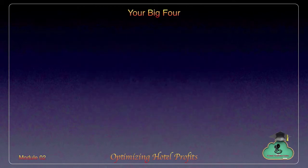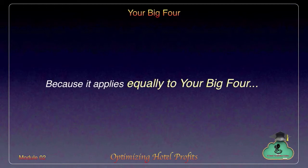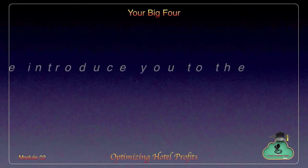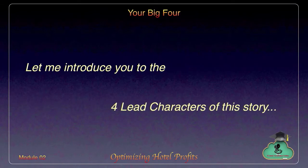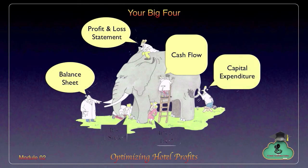What is the connection of this ancient parable with our optimizing hotel profits course and this video segment on your big four? As it turns out, there is a huge connection. The moral of the story applies equally to your big four. Each of these financial statements plays a role, and looking at them individually will be like the blind men touching individual parts of the elephant's body. This principle is often known as the big picture overview.